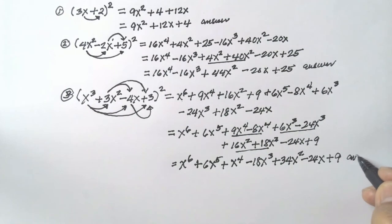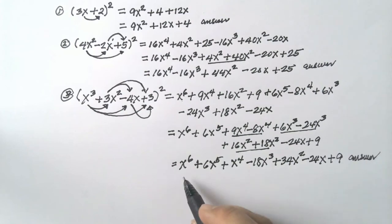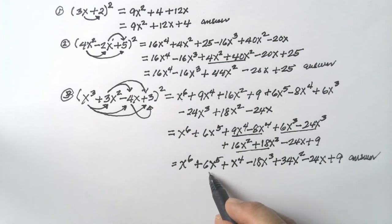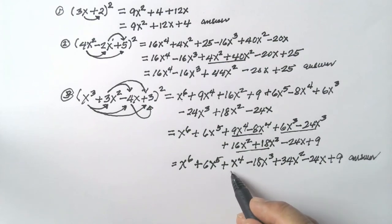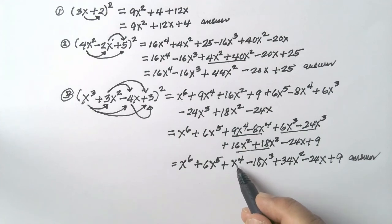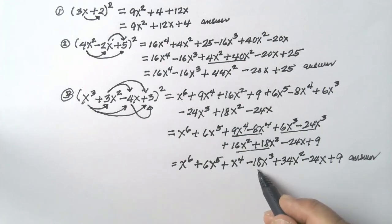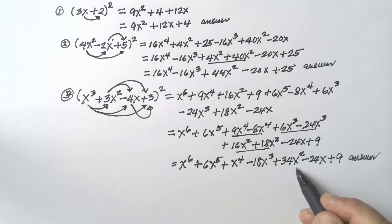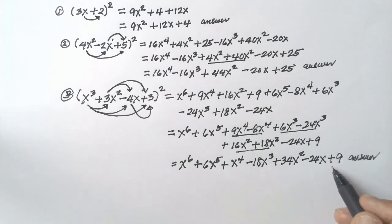So the answer is x to the exponent of 6, plus 6x to the exponent of 5, plus x to the exponent of 4, minus 18x cubed, plus 34x squared, minus 24x plus 9.